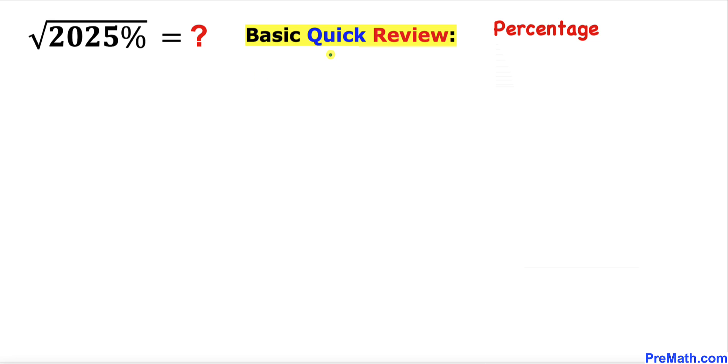Let's get started with the solution. Let me go over a basic review first. Let's talk about percentage. In mathematics, percent means divided by 100. Therefore, 2025 percent means that we are going to divide 2025 by 100.